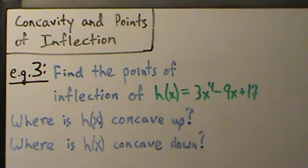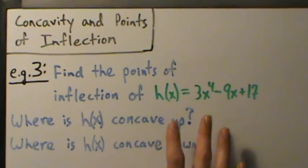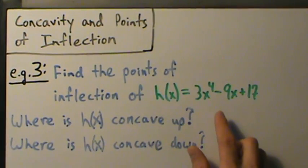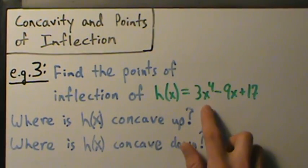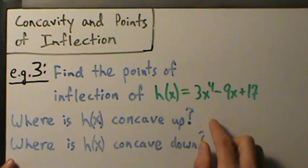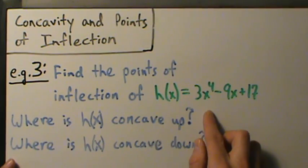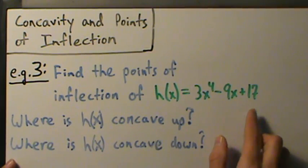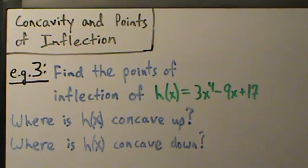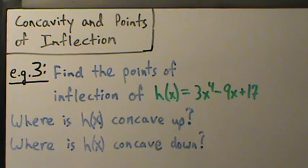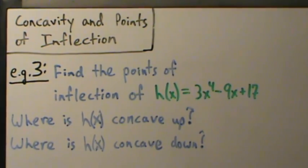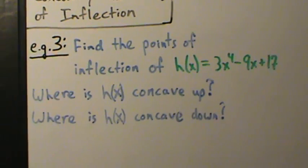First thing I want to notice is: are there any domain restrictions? No, there aren't any. This is just a polynomial — 3x to the 4th minus 9x plus 17 — so no square roots, no division, nothing going on like that. Everything's fine there. So let's just jump right in with derivatives.